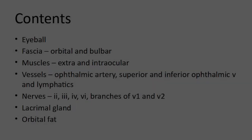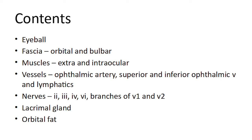Coming to the nerves and vessels of orbit: in vessels we have the ophthalmic artery, the superior and inferior ophthalmic veins, and some lymphatics. In nerves we have the second or optic nerve, third or oculomotor nerve, fourth trochlear nerve, sixth abducent nerve, and branches of the first and second divisions of the trigeminal nerve.